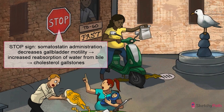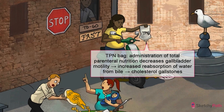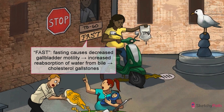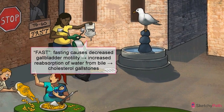Somatostatin analog administration — in the setting of acromegaly, for instance, when you're trying to put a stop to excessive growth hormone activity — turns out somatostatin puts a stop to gallbladder contraction as well. That's not a to-go bag, by the way — that's a TPN bag. Total parenteral nutrition, or TPN, is another risk factor for developing gallstones, especially in children. If you have a catheter sending nutrients straight to the circulation, the GI tract gets bored and sleepy, the gallbladder has no stimulus to contract, and voila — bile stasis leading to cholesterol gallstones.